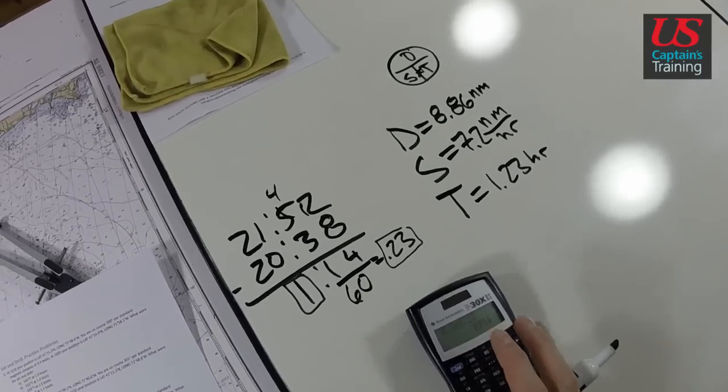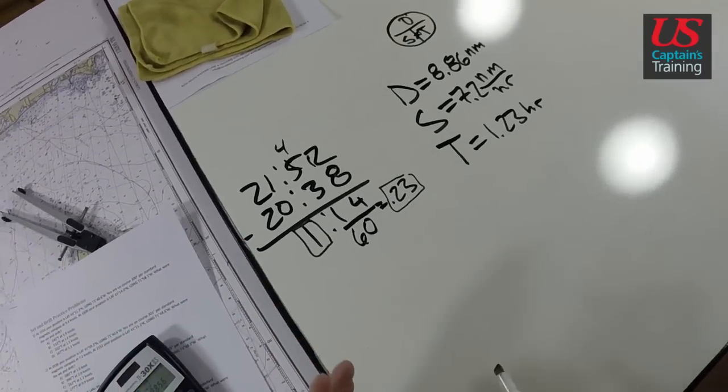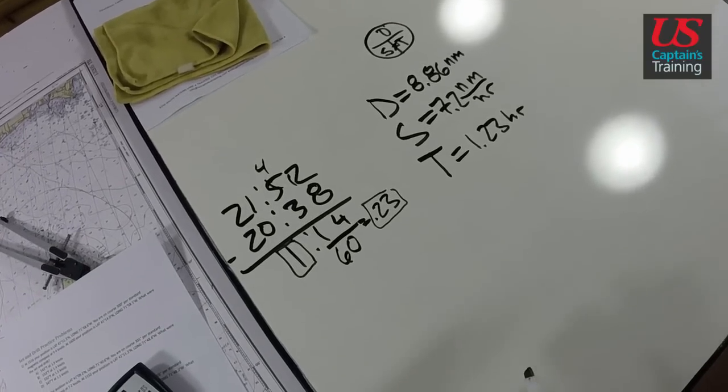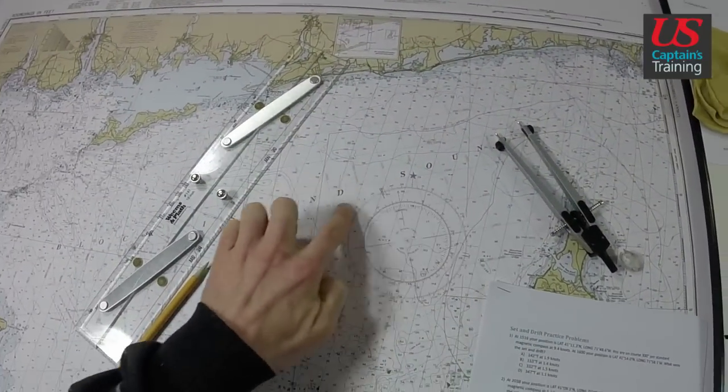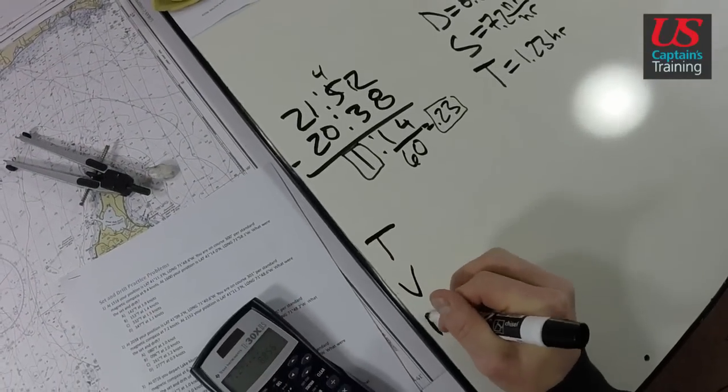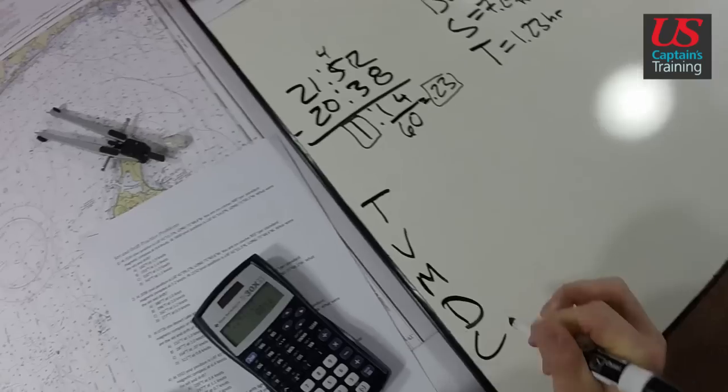So now we have a distance down that line. And we need to correct our compass course to a true course so we can put it on the compass rose. So we need a T, V, M, D, C.